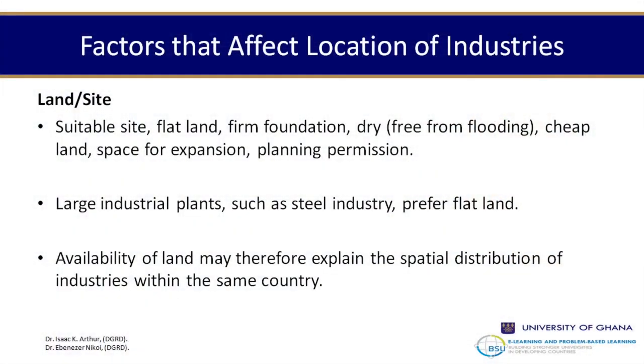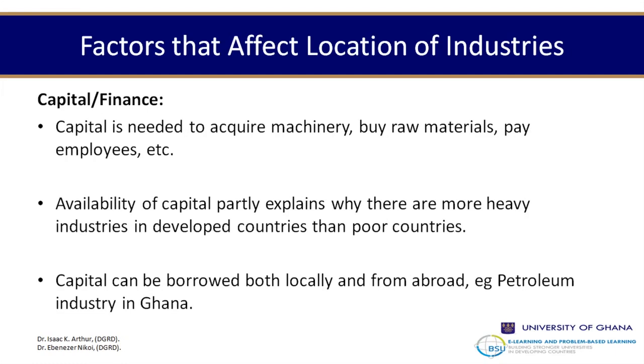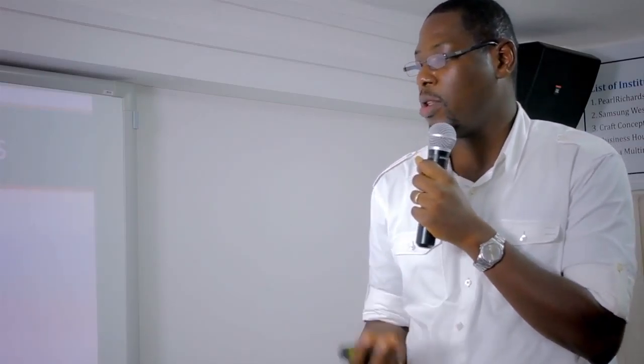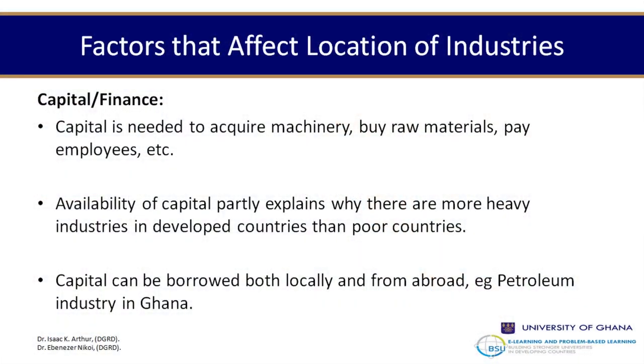The availability of land explains the spatial distribution of industries within any economy. Capital is another factor — it is needed to acquire machinery, buy raw materials, and pay workers. The availability of capital explains why there are more heavy industries in the developed world than in poor countries, since advanced countries can access capital more easily.